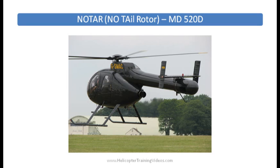What NOTAR does is take the downwash from the main rotor and, as it goes over the tail boom, there is also jet exhaust on the inside of the tail boom being blasted out through slots on the side to increase the airflow on one side. The downwash from the rotor wash and the air being blown out increases the airflow on one side, creating the effect of drawing the tail boom towards that side.